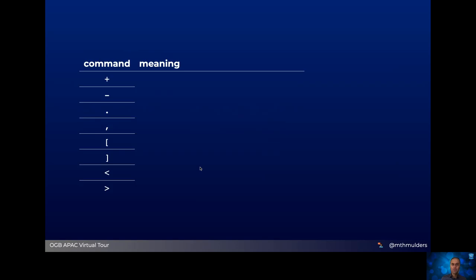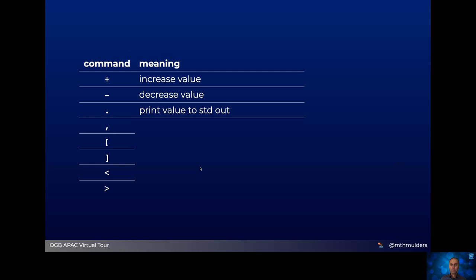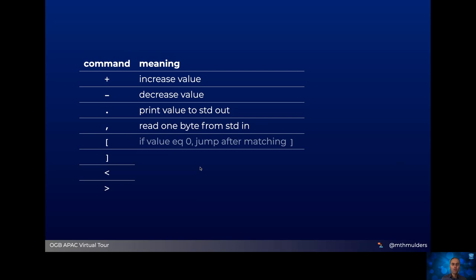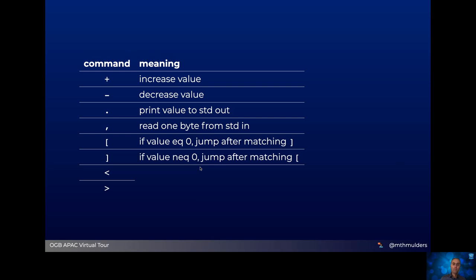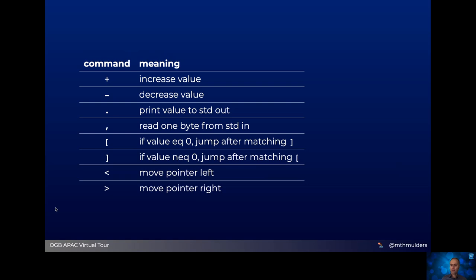There are in total eight commands. Plus means to increase the value in the current slot, while minus means to decrease it. The dot means to print a value to standard out, while the comma means to read one byte from standard in. An opening square bracket means that if the value in the current slot equals zero, the program must jump until after the matching closing bracket. Correspondingly, a closing square bracket means if the value is not zero, the program should jump to after the matching opening bracket. And finally, we can move the pointer left or right one slot at a time. Those eight commands are the whole language.